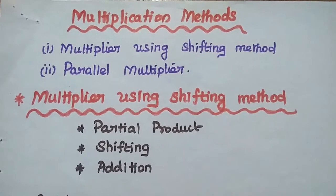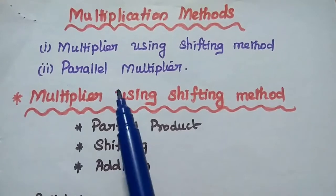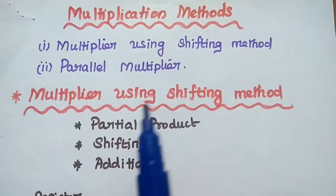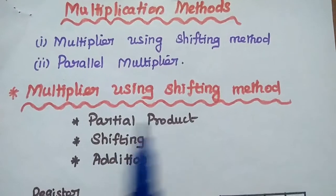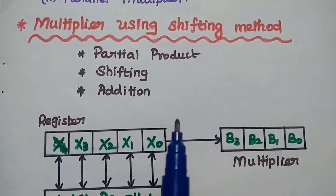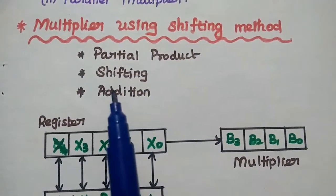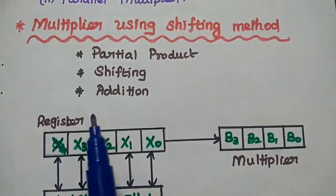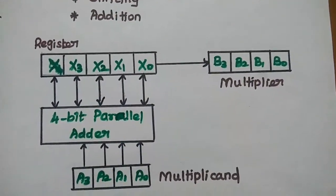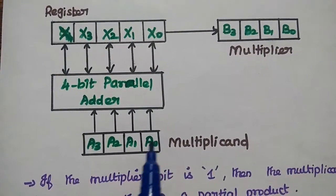There are 2 multiplication methods available for binary multiplier. The first one is the multiplier using shifting method, and the second one is the parallel multiplier. Let's discuss each one in detail. In the shifting method, we follow 3 steps: partial product, shifting, and finally addition of the partial products. Here is the diagrammatic representation of this multiplier using shifting method.